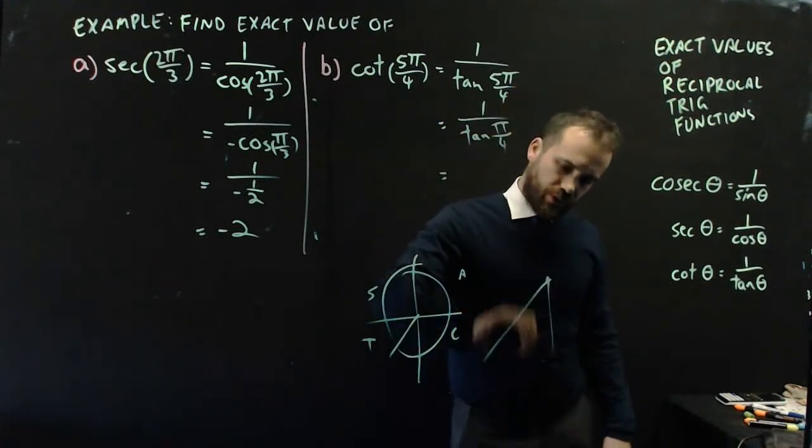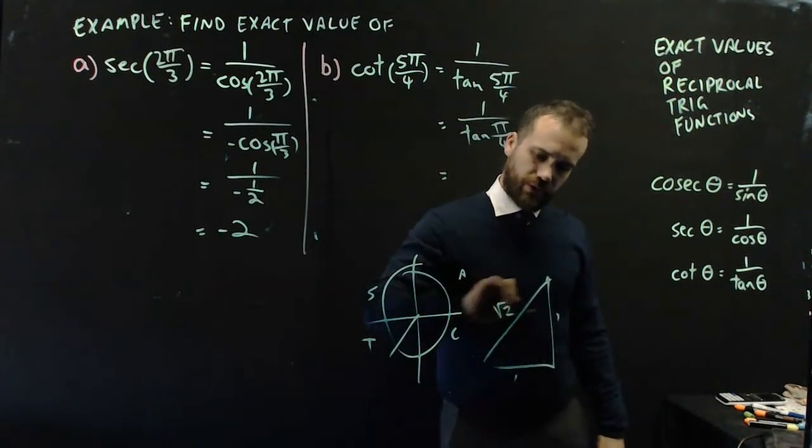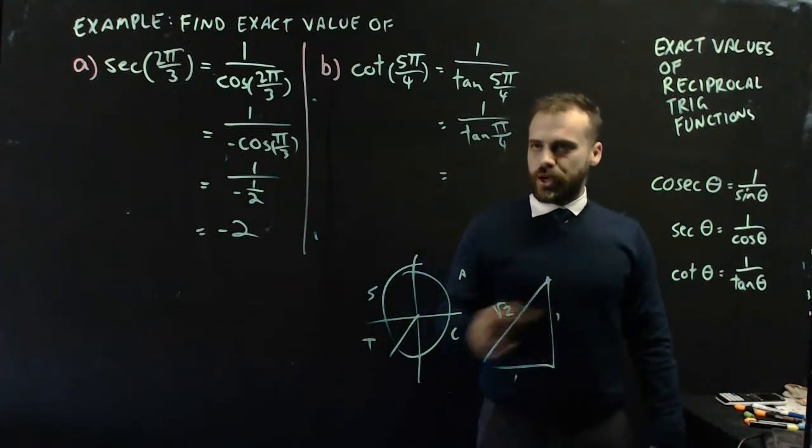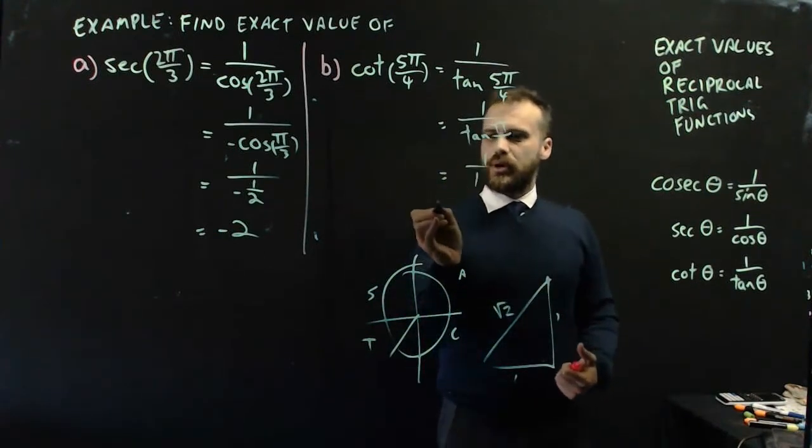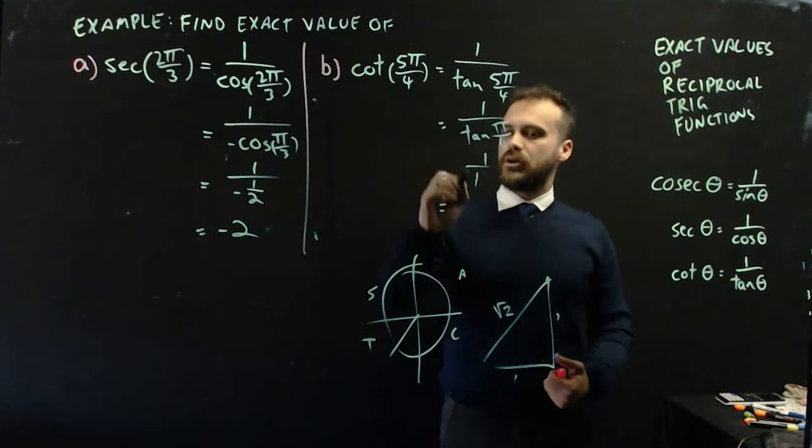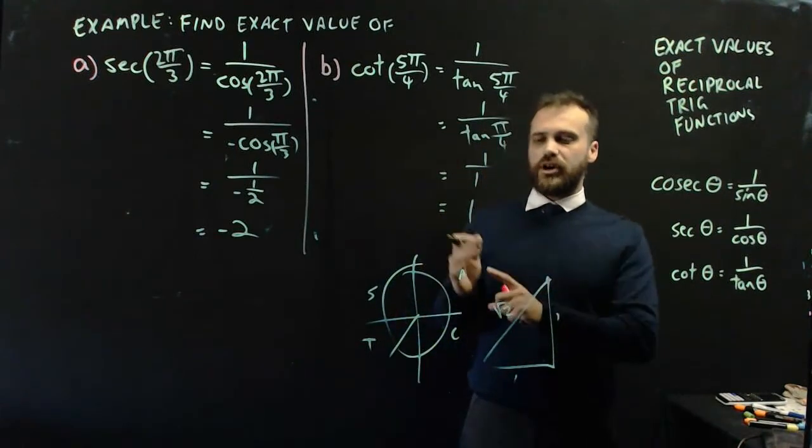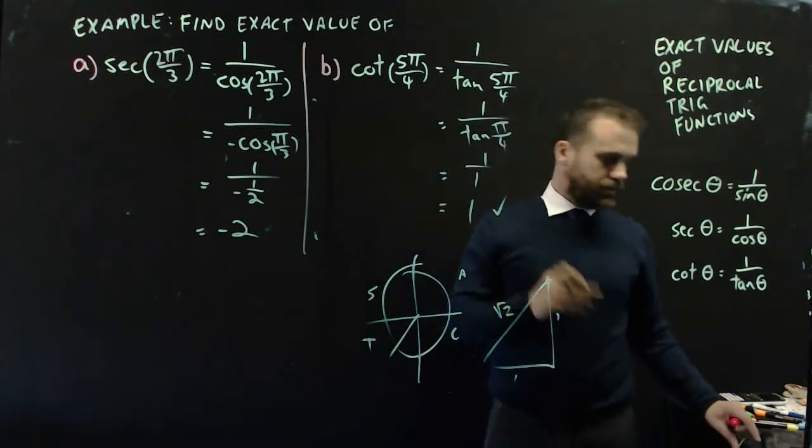It's going to be 1/tan π/4. And if I drew a standard triangle, 1, 1, √2, I would know that it's 1/1. So, it's 1/1, which is 1. Cot 5π/4 is equal to 1.